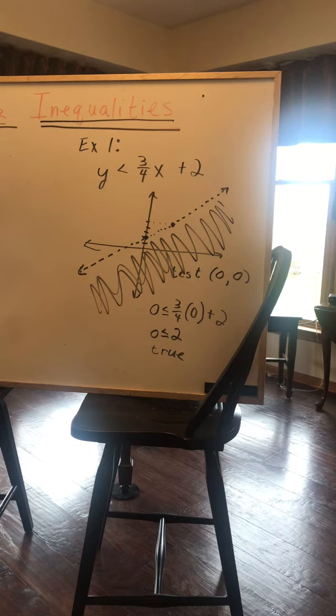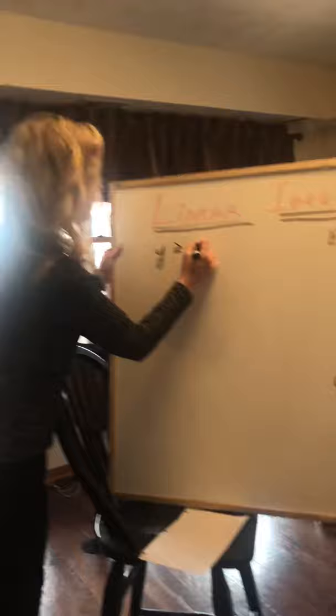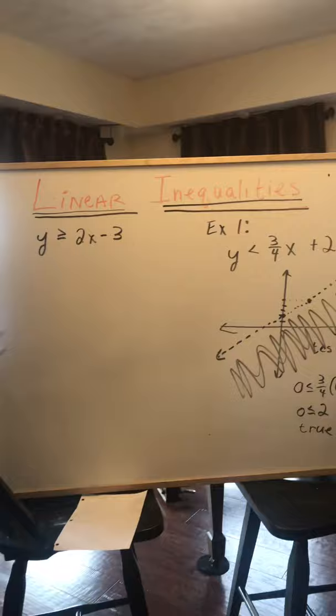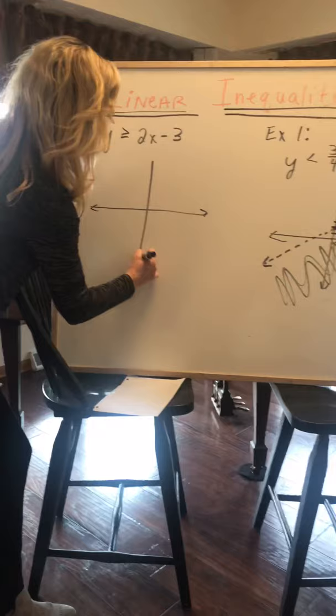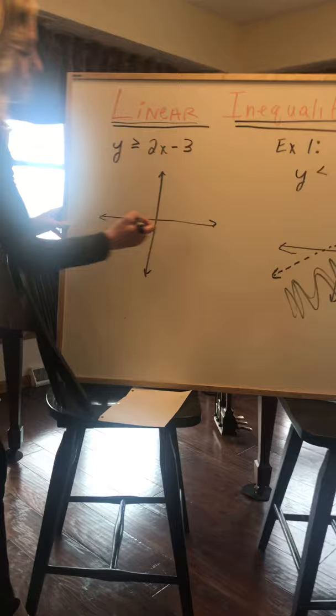We're going to do another example. For our next example, we will do y is greater than or equal to 2x minus 3. So again, it's in slope-intercept form. And I'm trying to ease you into this, so you will have a few that are in slope-intercept form as we begin. X axis, y axis, quadrants 1, 2, 3, 4, origin at 0, 0. Is it in slope-intercept form? Yes, we already decided that. Plot the y-intercept. So that's the point 0, negative 3.